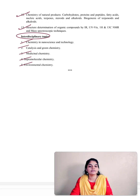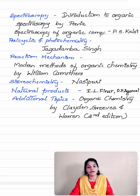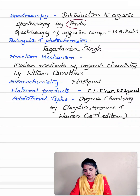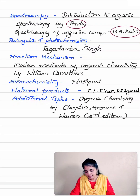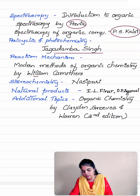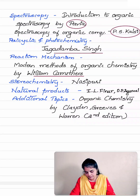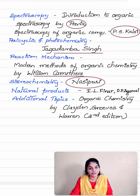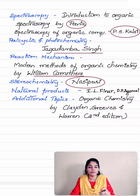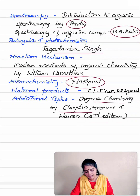For organic chemistry reference books: for organic spectroscopic techniques, refer introduction to organic spectroscopy by Pavia or spectroscopy of organic compounds by P.S. Kalsi. For pericyclic reactions and photochemistry, refer Jagadamba Singh. For reaction mechanisms, refer modern methods of organic chemistry by March. For stereochemistry, refer stereochemistry of organic compounds and its applications by Nasipuri. For natural products, refer O.P. Agarwal or the textbook by I.L. Finar. For heterocyclic chemistry, refer the textbook by Raj K. Bansal. For additional topics, refer organic chemistry by Clayden, Greeves, and Warren, second edition.